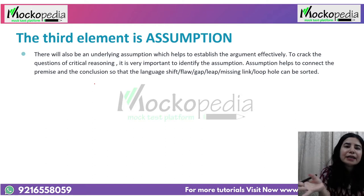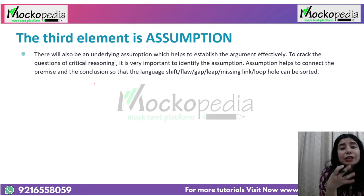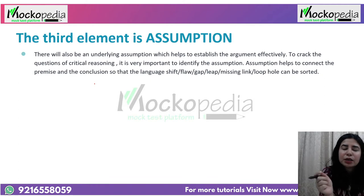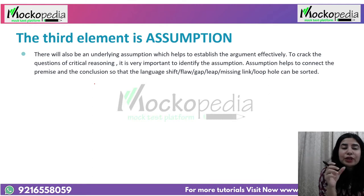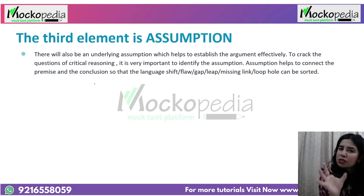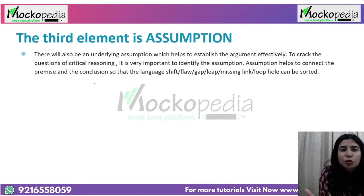Only being from IIT cannot validate that the placement happened — other factors haven't been talked about. This remains a gap or loophole in the argument. So we take into consideration an assumption. An assumption is always unstated — something implicit, something not directly pointed out. We assume that being from IIT, combined with other qualities, helped play an important role in the placement.